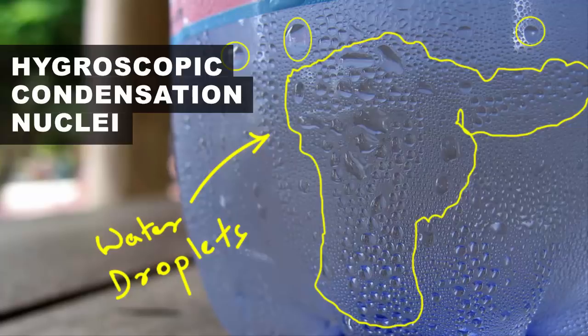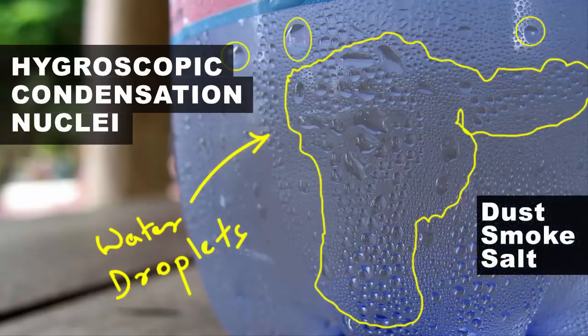So if at all anyone asks you what is there inside a water droplet, or what is it that is holding the water together in the shape of a drop, then you should be able to say that there are tiny particles of dust, smoke and salt which have the property to absorb water molecules from the surrounding environment. So this is what is hygroscopic condensation nuclei.